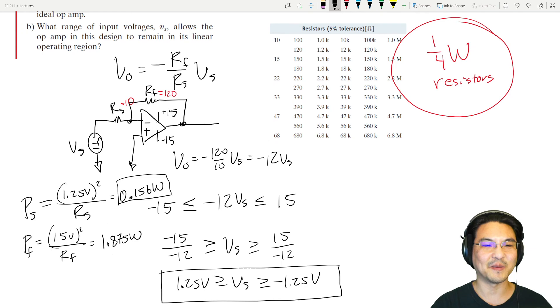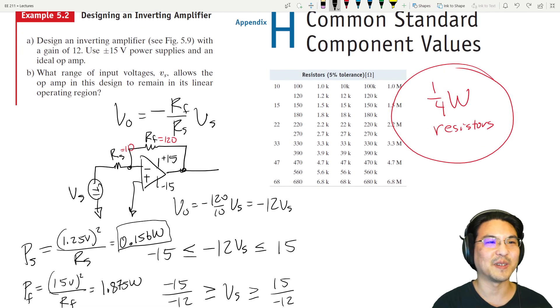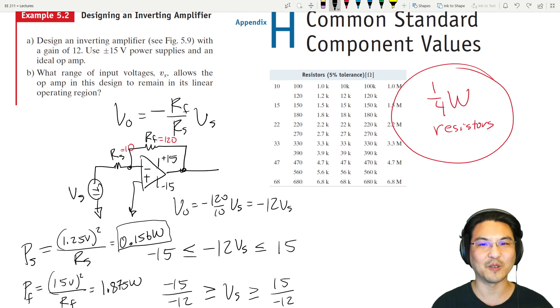We met the design constraints here of having a gain of 12, and we figured out the range of input voltages to not saturate. But we also have to be careful about the power being absorbed by the resistors. So this 10 and 120, it's not going to work—it's going to burn.